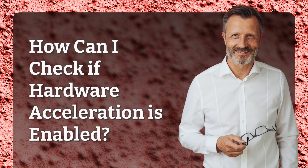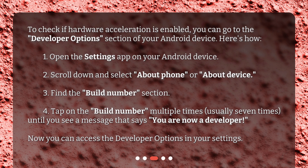How can I check if hardware acceleration is enabled? To check if hardware acceleration is enabled, you can go to the Developer Options section of your Android device. Here's how.